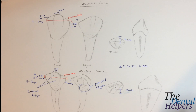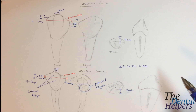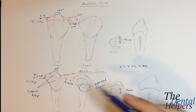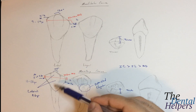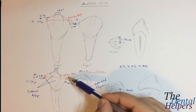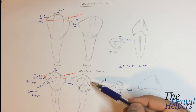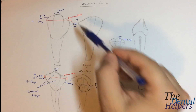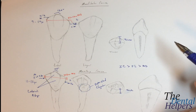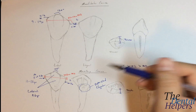Another example: the lingual fossa and ridge are less pronounced in the mandibular and more pronounced in the maxillary. In the maxillary, in terms of the ridges, the lingual ridge is going to be the greatest, then the distal marginal ridge, then the mesial marginal ridge. When we look at the mandibular, the marginal and lingual ridges are not that prominent — not as noticeable as the maxillary teeth.